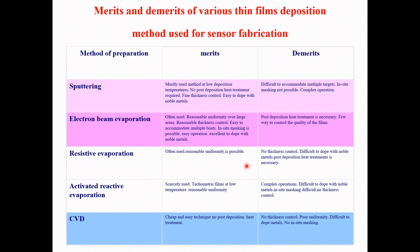Activated reactive evaporation is another type of evaporation technique. It is scarcely used and produces stoichiometric films at large temperatures with reasonable uniformity in film deposition. The demerits of this technique include: complex operations, very difficult to dope with noble metals, in-situ masking is difficult, and no thickness control.